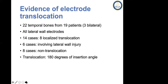The second study we did was to look at evidence of electrode translocation. We looked at 22 bones and realized that some had rather limited localized translocation, whereas some had much more extensive or global intracochlear injury — not only translocation through the basilar membrane but also changes or injury to the lateral wall. We also had 10 proven specimens, eight of which didn't demonstrate any evidence of translocation.